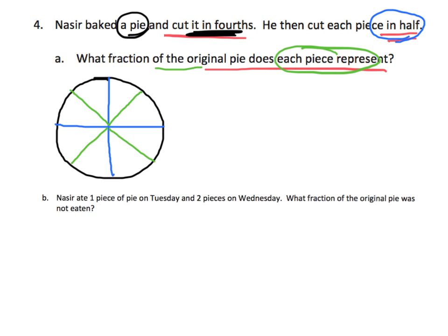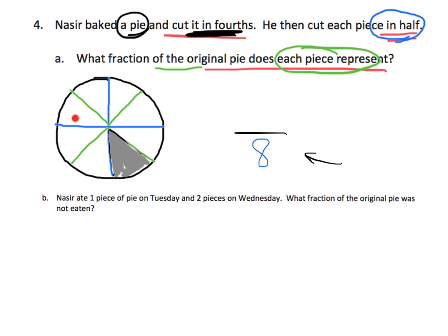The denominator is the number of pieces the whole has been cut into, and that's eight — we can count one, two, three, four, five, six, seven, eight pieces. Each piece represents one out of the eight, so one-eighth. That's the answer.